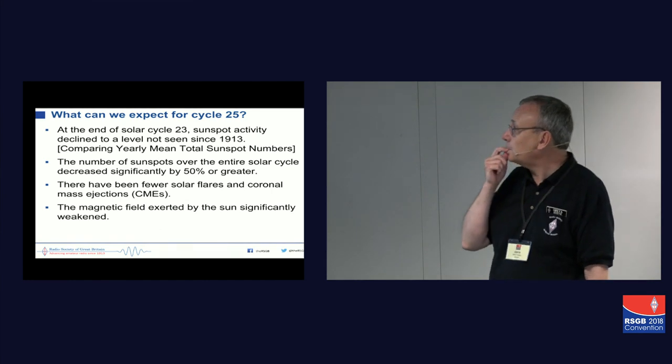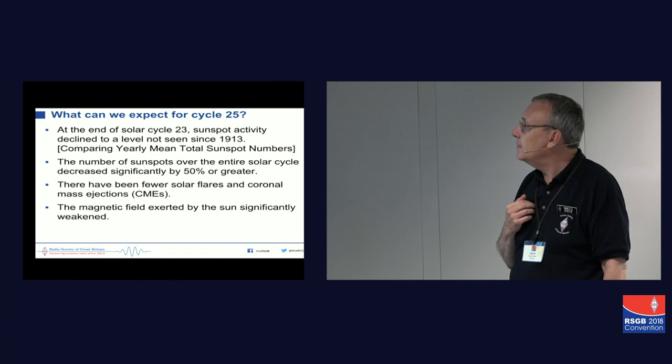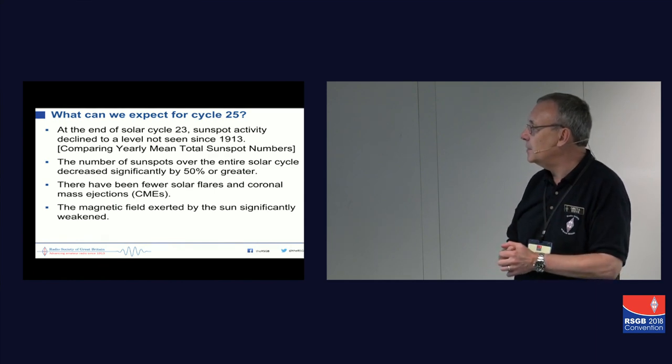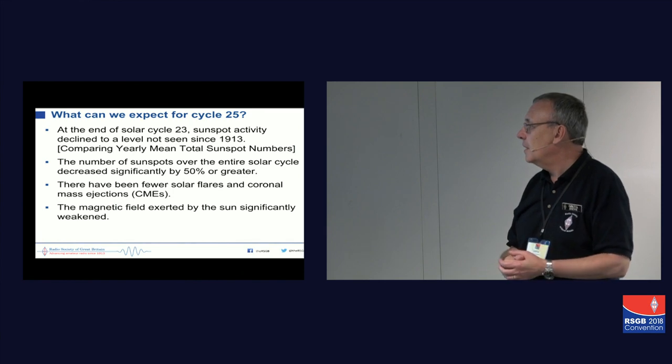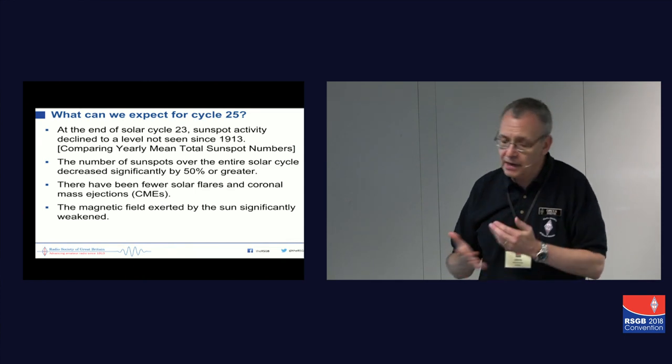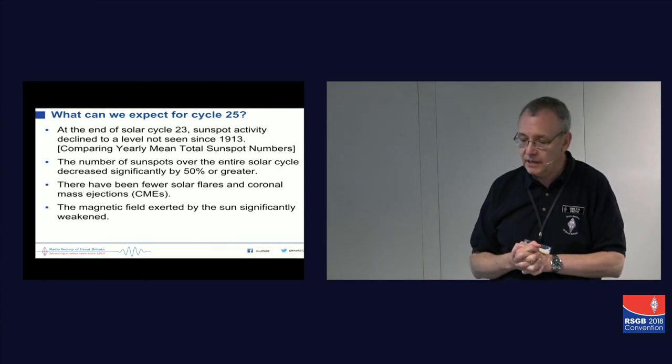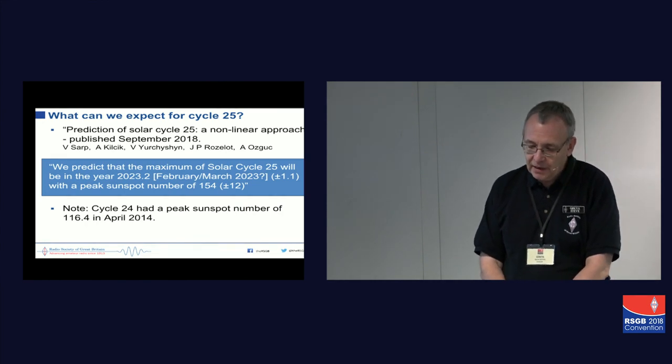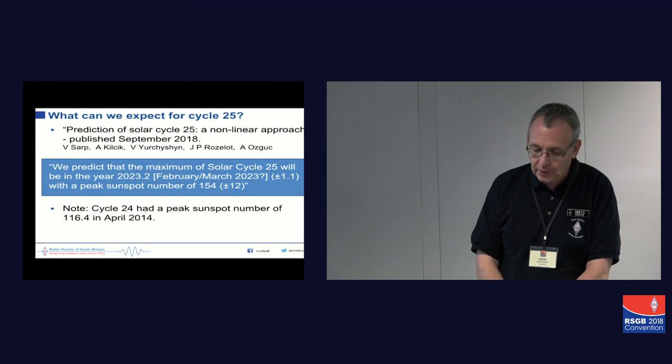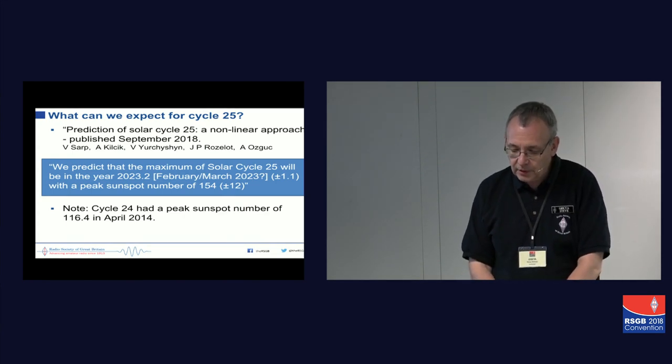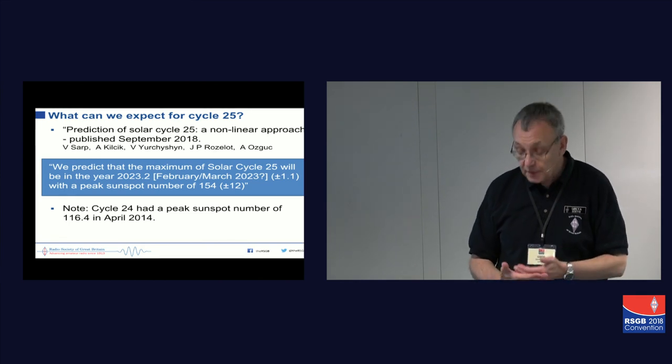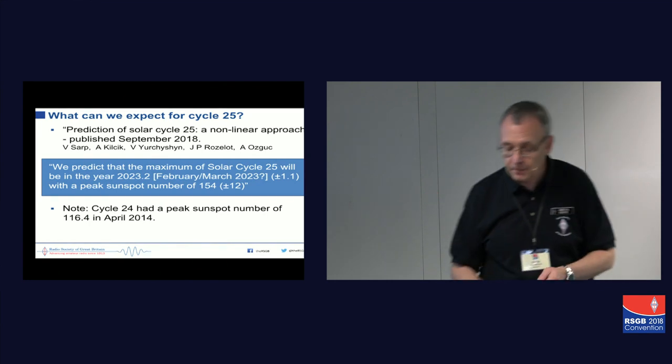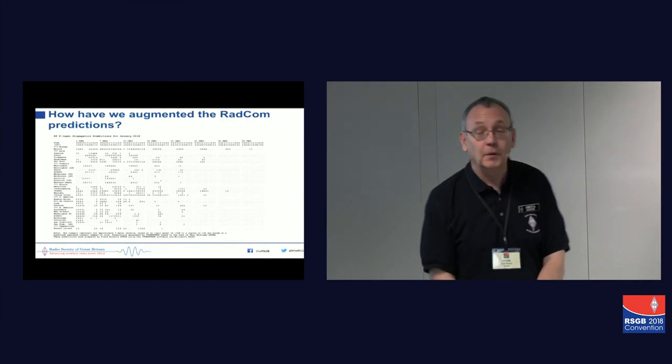So what can we expect? Well, at the end of cycle 23, sunspot activity declined to a level not seen since 1913. This is all doom and gloom stuff, this. The number of sunspots over the entire cycle was decreased significantly by 50% or greater. There were fewer flares and coronal mass ejections, and the magnetic field exerted by the sun was significantly weakened. So again, more evidence, really, that we're not going to see a fantastic cycle 25. This was another paper that was published in September 2018 that said they predicted that the maximum of solar cycle 25 will be in 2023, February-March time, the peak sunspot number of 154. Well, when you bear in mind that the peak sunspot number of this last cycle was 116, that's rather suggesting that the next cycle is going to be better. Take your pick. Who do you want to believe? I'd go with David Hathaway at the moment.